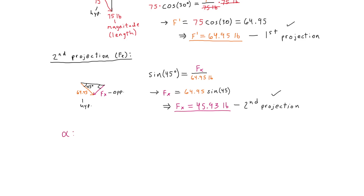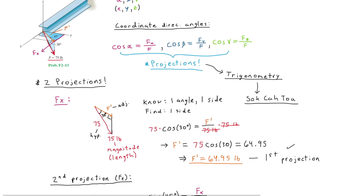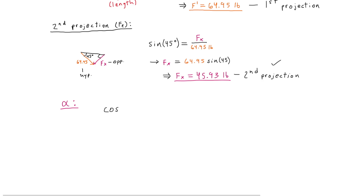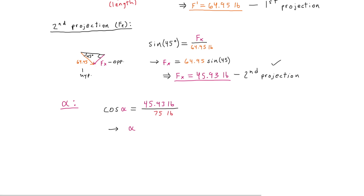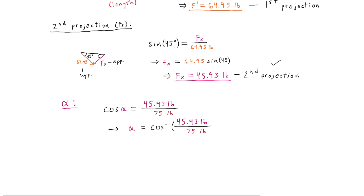This completes our second projection, where we have found the x component of our force. We're now ready to find alpha, using the coordinate direction angle equation: cosine alpha equals Fx over F. Substituting our known values, cosine alpha equals 45.93 pounds over 75 pounds. Taking the inverse cosine of both sides, alpha equals inverse cosine of 45.93 over 75, giving us approximately 52.24 degrees.